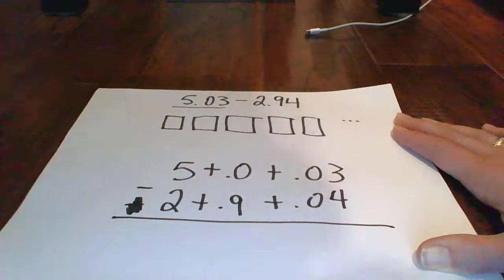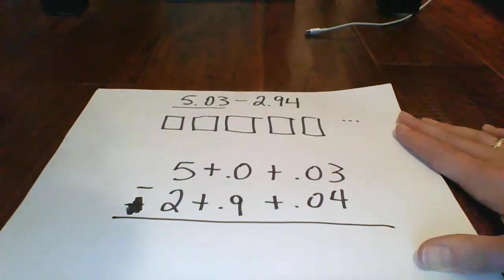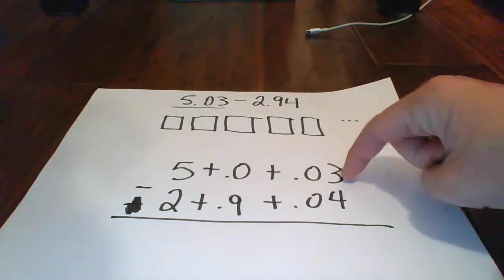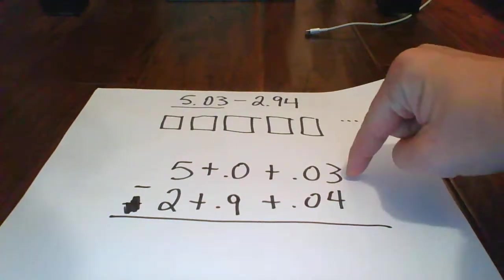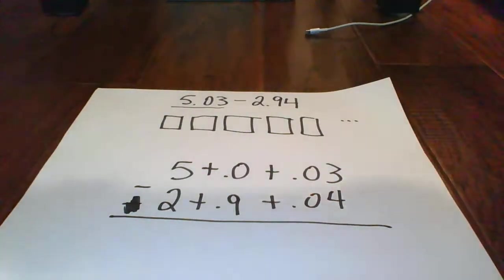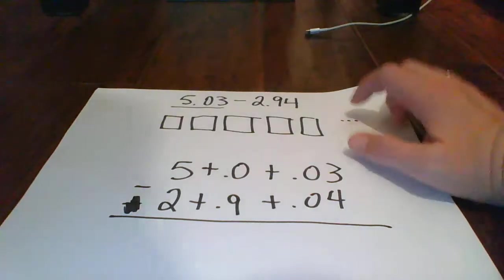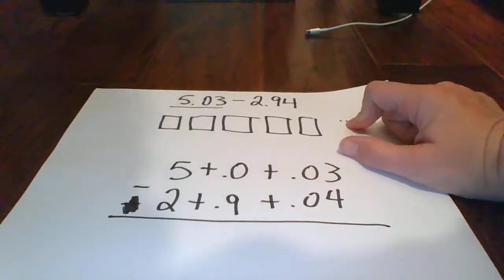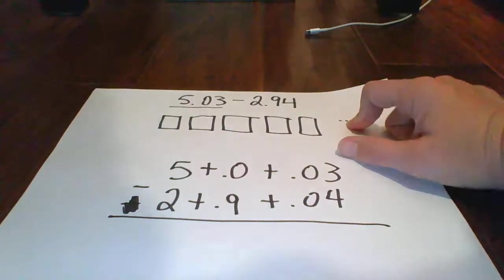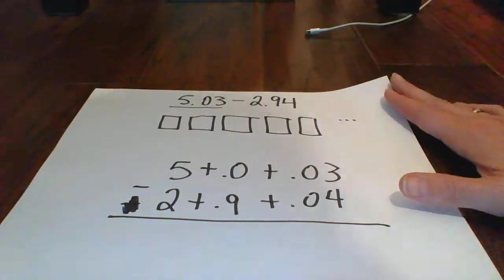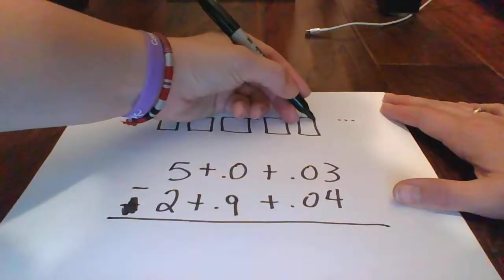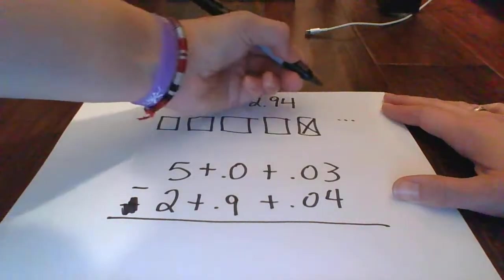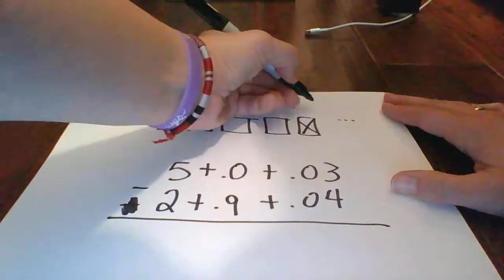So when I look at that, whoops, subtraction... I cannot take 4 cents away from 3 cents, or 4 hundredths from 3 hundredths. So I have something that I need to do. The first thing I'm going to need to do is, I don't have any tenths to help me out here, so I have to go straight to the wholes place. And so when I take that whole, I'm not taking it away. I'm simply changing it and breaking it apart into tenths.